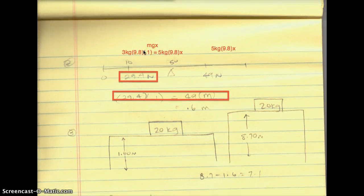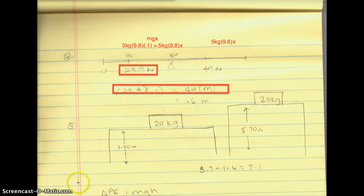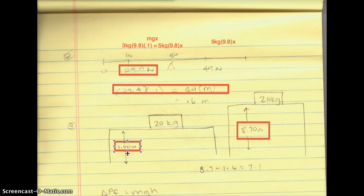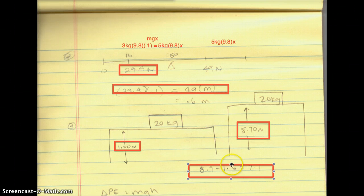So the first thing we're going to do is we're going to look at the difference in height. So we know that the height here is 8.7 meters. We know that the height here is 1.6 meters. So we're just going to subtract our 8.7 minus 1.6, and that's going to give us 7.1.